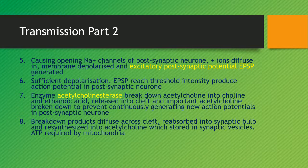This will cause the opening of sodium positive ion channels in the post-synaptic neuron, and the positive ions will diffuse in, meaning the membrane will become depolarized and an excitatory post-synaptic potential, or EPSP, will be generated. When sufficient depolarization occurs, the EPSP will reach a threshold and produce an action potential in the post-synaptic membrane, which will then transmit down that neuron until it gets to the effector. Now the enzyme acetylcholinesterase will break down acetylcholine into two products: choline and ethanoic acid.